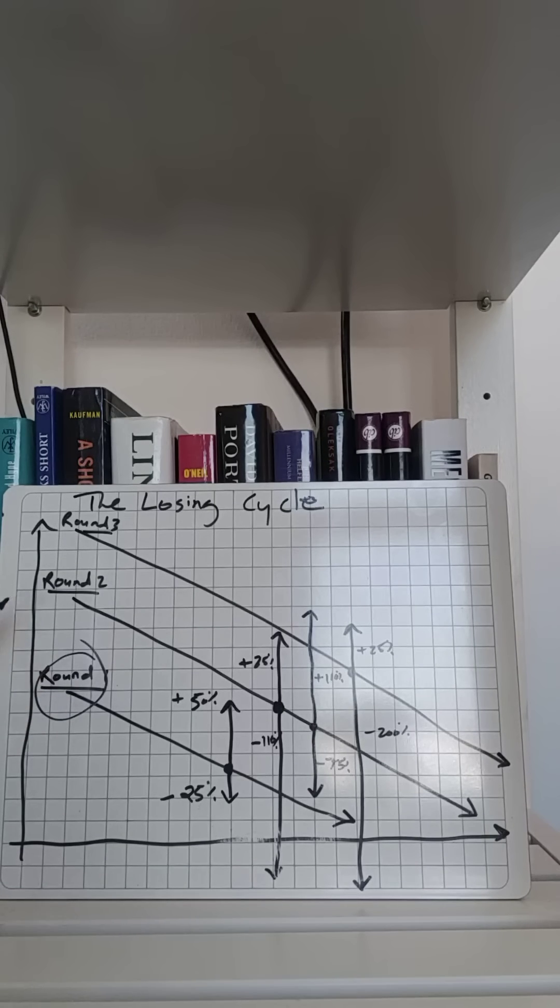When you start betting, you are incrementally losing. Obviously you're not winning constantly. There are ups and downs, so you realize some gain, some loss, some gain, some loss, but overall you are on a losing cycle. You're accumulating losses as you bet, you're not accumulating wins.